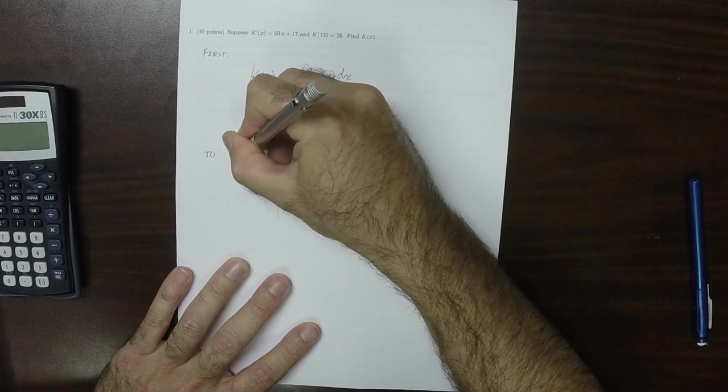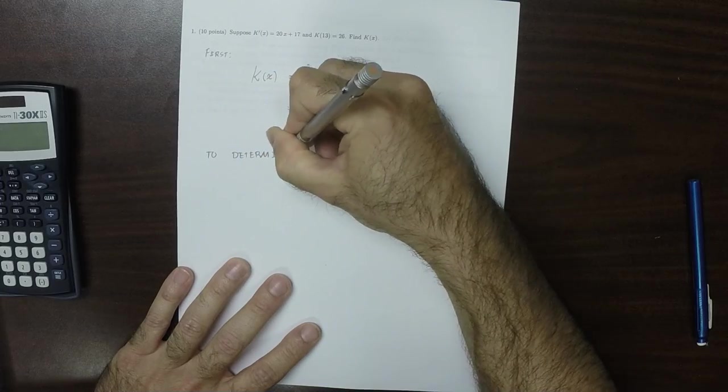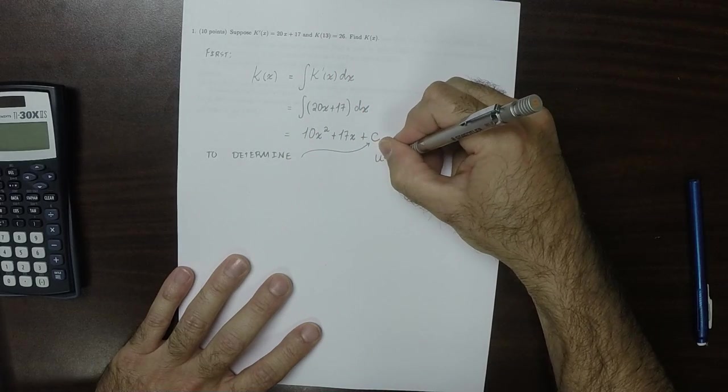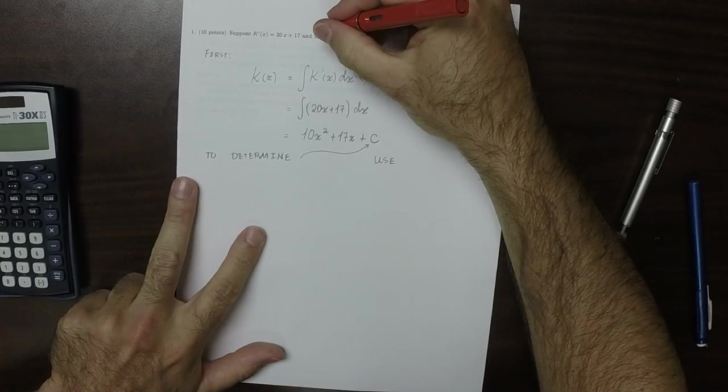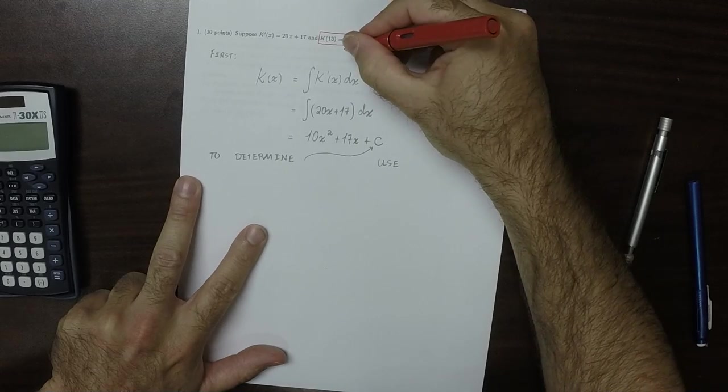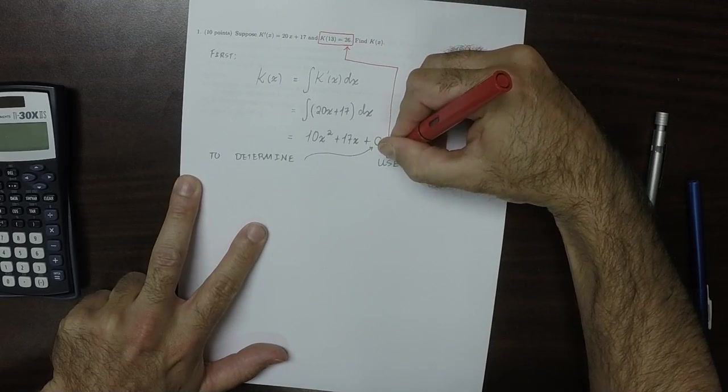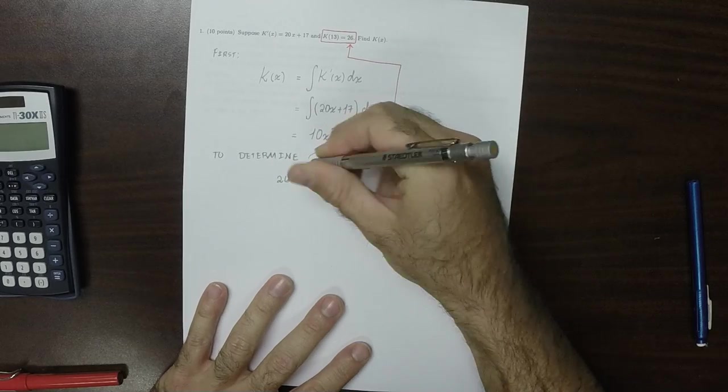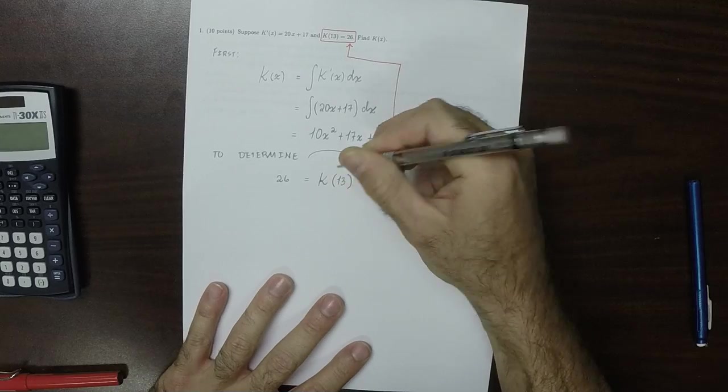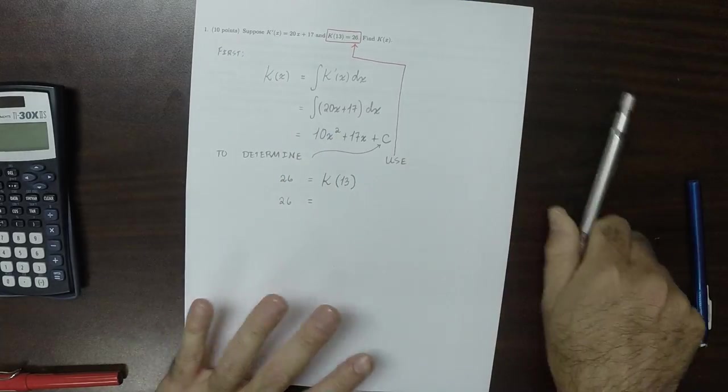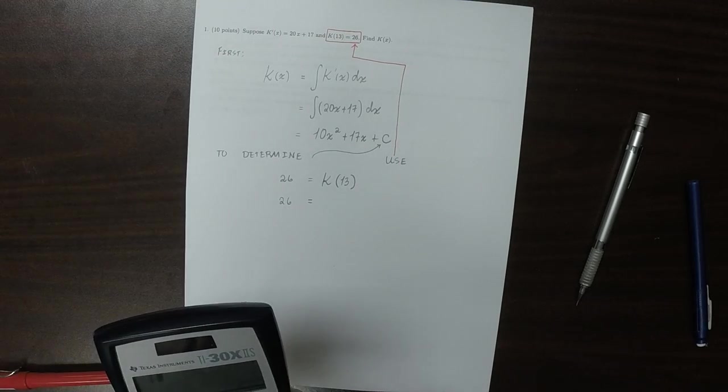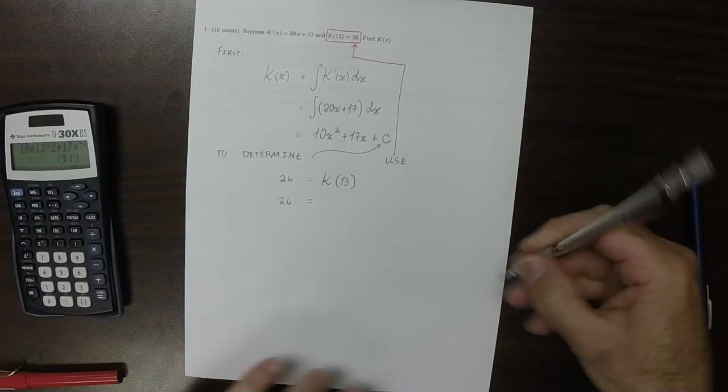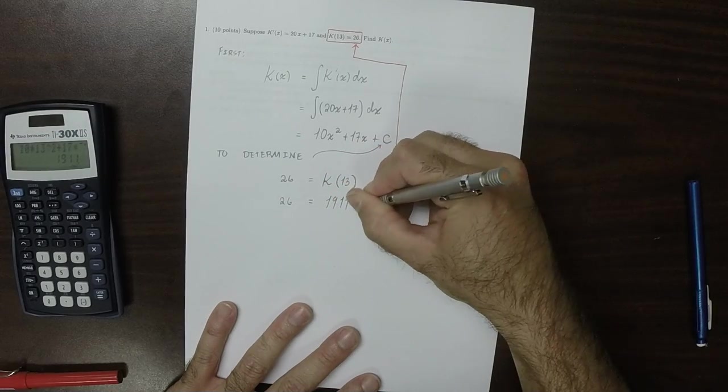Now, to determine the value of the unknown constant c, we'll use this information. So we're supposed to get 26 when we plug in 13. So 26 is, I'll use the calculator, 10 times 13² plus 17 times 13. So that's 1911 plus c.